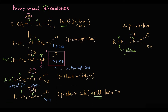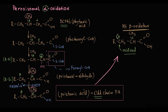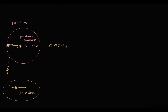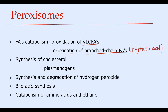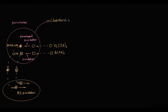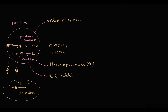Odd-chain fatty acids can then be delivered to mitochondria, where they will undergo mitochondrial beta-oxidation. Also important is that peroxisomes participate in synthesis of cholesterol, plasmalogens — which are membrane phospholipids functioning as antioxidants — and peroxisomes provide both synthesis and degradation of hydrogen peroxide. So there are three important functions: cholesterol synthesis, synthesis of plasmalogens providing antioxidant defense, and regulation of hydrogen peroxide metabolism.